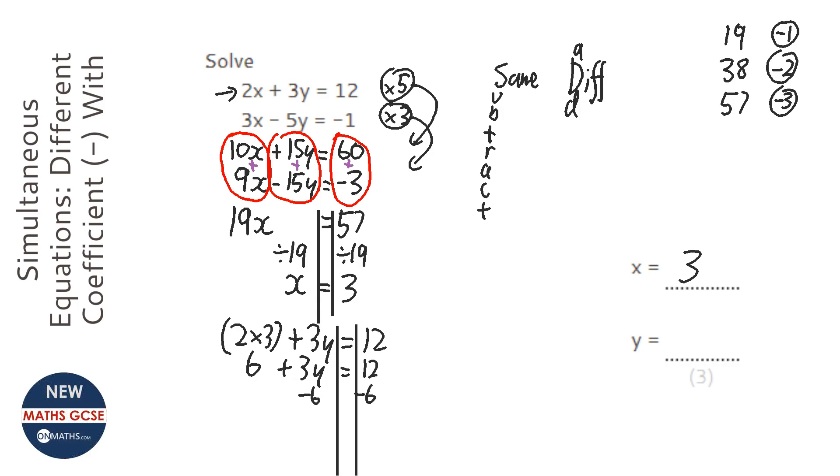Take away 6 both sides. 3y equals 6. Divide by 3 both sides. We've got y equals 2.